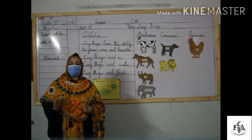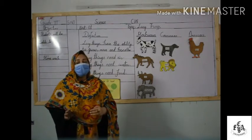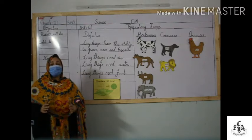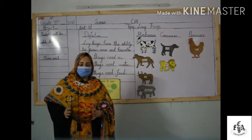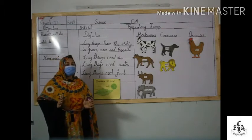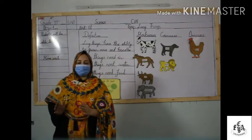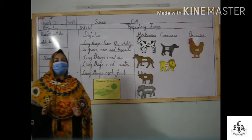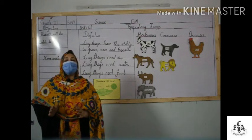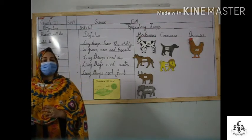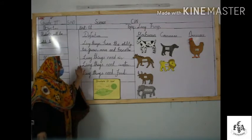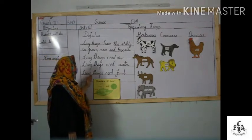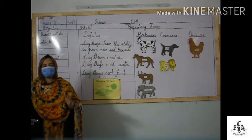Number two: living things need water. All living things are made mostly of water. Three quarters of our body is made up of water. When we feel thirsty, our body needs water. Plants also need water to make their food in the presence of sunlight. If we do not water plants, they will die and will not survive.